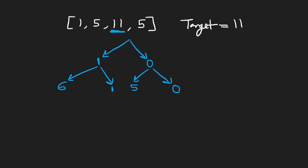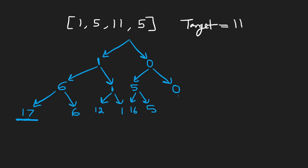Next we get an 11. Continuing that — 11 plus six is going to give us 17 on this path. Clearly we went over so we would probably not want to continue down this path. But over here if we skip the 11 we'll get a six still. If we take 11 here we're going to get 12; if we skip it we'll get one. We'll get 16 here, skip we'll get five. If we take 11 here we'll get 11. Clearly we found our target that we were looking for. We don't really have to continue anymore — we can skip this last element, we found our target, we're going to return true.